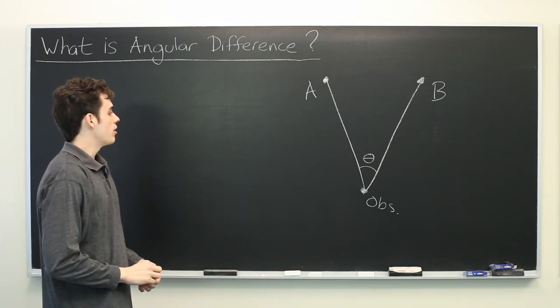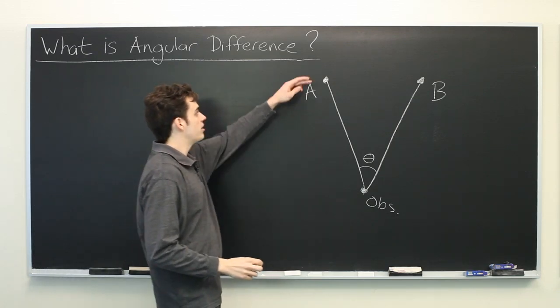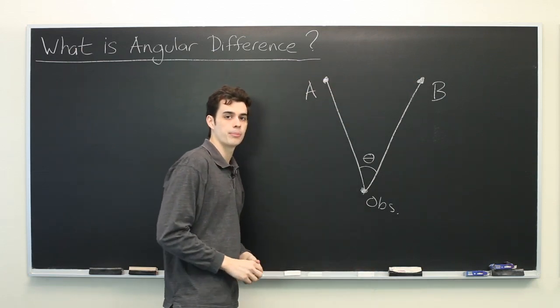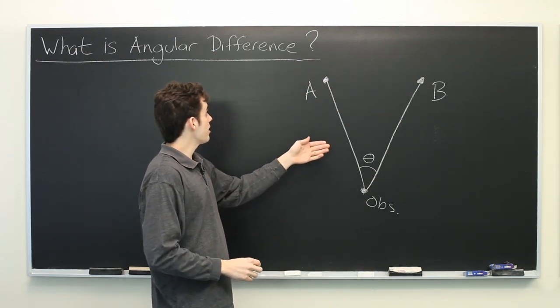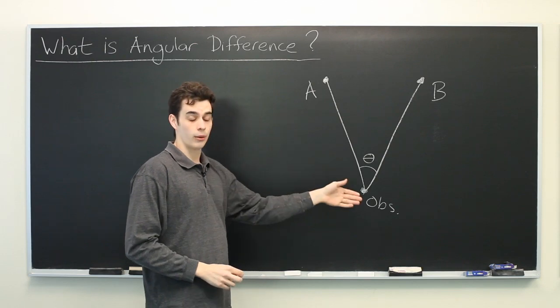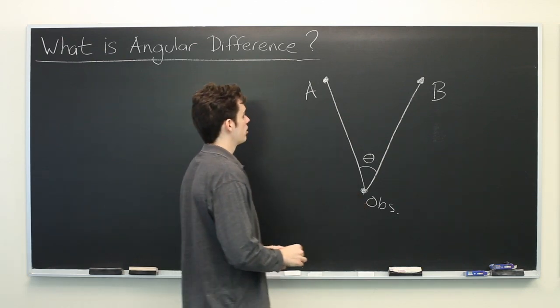Now one important thing to note is that while the distance between the two objects is a constant, the angular difference depends on where the observer is.